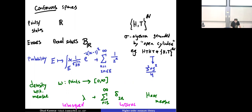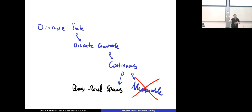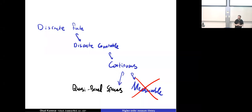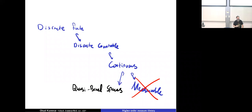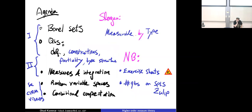Going down the route of measure theory, there are some constructions you can't get — for example, function spaces. Function spaces are extremely useful for modular development of programs and also of models. Once you have function spaces, you can construct lambda terms, and you can tell that something is measurable just by looking at the term's type — measurability is guaranteed without any additional checking. This is the alternative universe of quasi-Borel spaces.